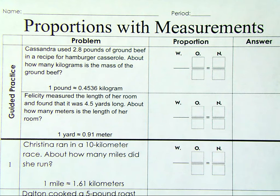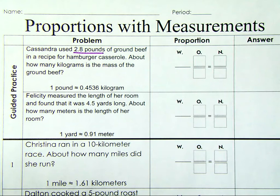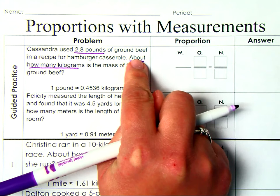So it says, Cassandra used 2.8 pounds of ground beef in a recipe for hamburger casserole. About how many kilograms, because remember the keyword is about, because these are approximations since we're going between the units, is the mass of the ground beef?